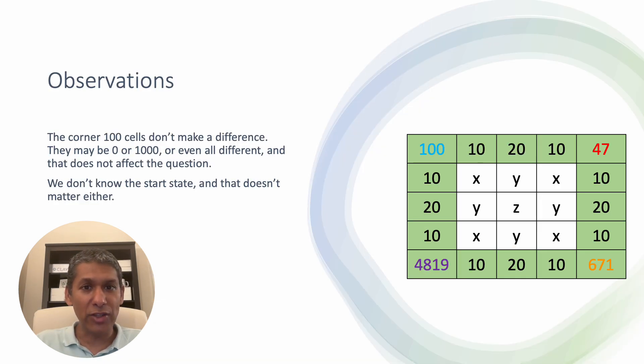Then the next thing we do is we actually make a couple of observations here. First observation we make is that these corner cells, 100 cells, actually don't make a difference. Because we can never reach them anyway. When we start from this cell, we go this direction, maybe we don't end up here, maybe we end up here or we end up here. But we can certainly never end in the 100. So 100 actually makes no difference. So if the question was given to us as 100, 47, 48, 1, 9, 6, 71, some random numbers, the answer does not change.